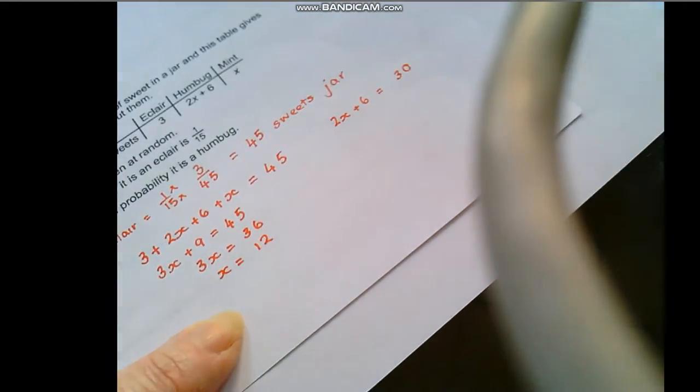Okay now we know that x is equal to 12 and we know there were 45 sweets in the jar. What we can do from there is we know that 2x plus 6 is going to equal 30 because 2 times 12 is 24 plus 6 is 30. Therefore for probability we have a total of 30 sweets out of 45.